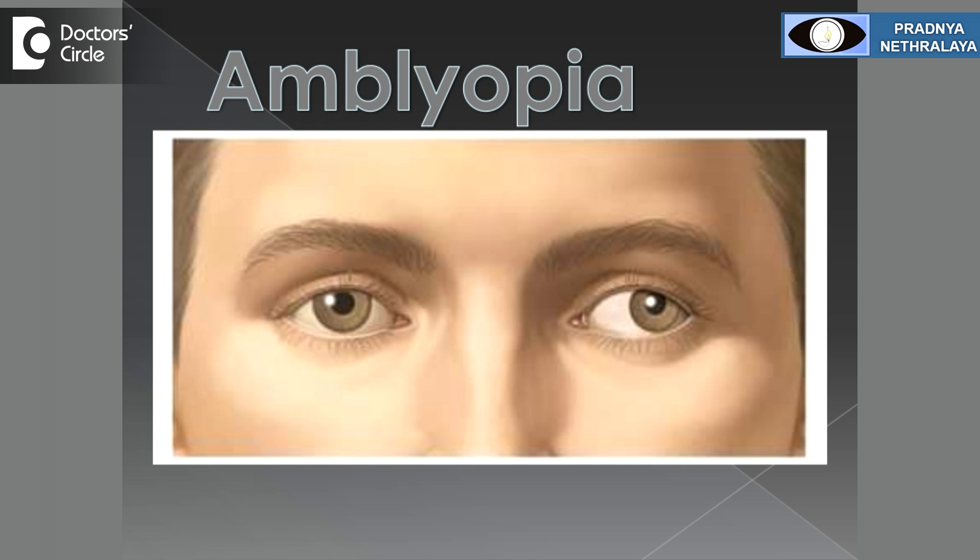The most common cause in India is congenital, or children born with it. The second most common cause is high refractive errors. Children with high refractive errors in one eye can develop a condition which is called as lazy eye or amblyopia. Because of high refractive errors in one eye, the child is not able to see clearly in that eye, so the brain starts ignoring that eye and the eye starts going towards squint or strabismus.